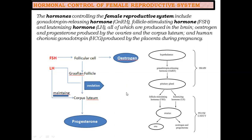HCG — Human Chorionic Gonadotropin — is also a hormone involved during pregnancy, implantation, and placenta formation.